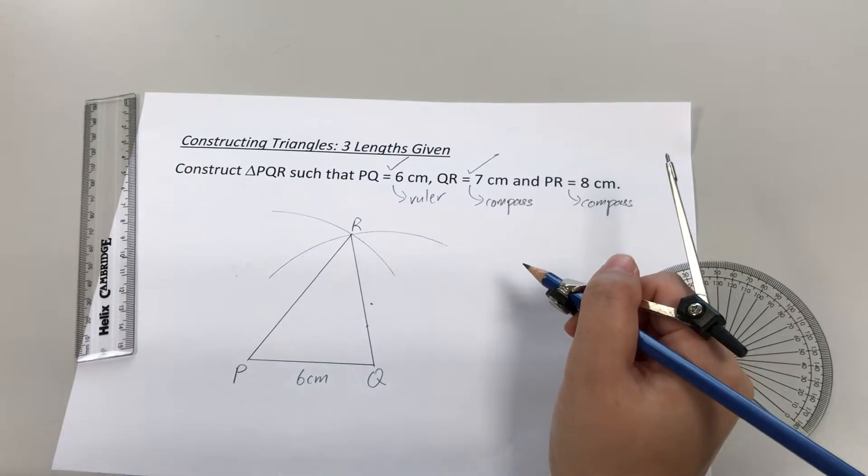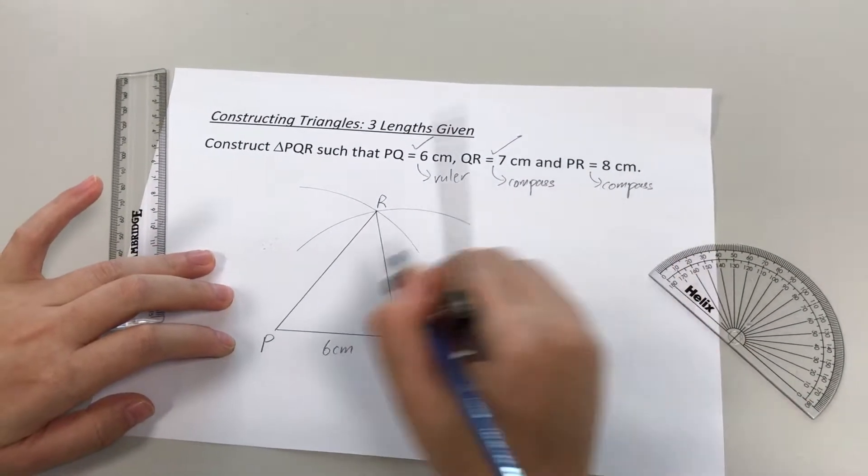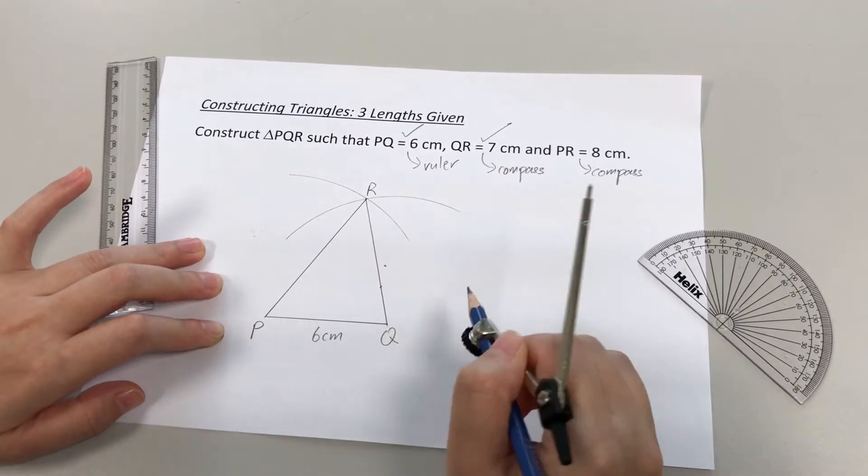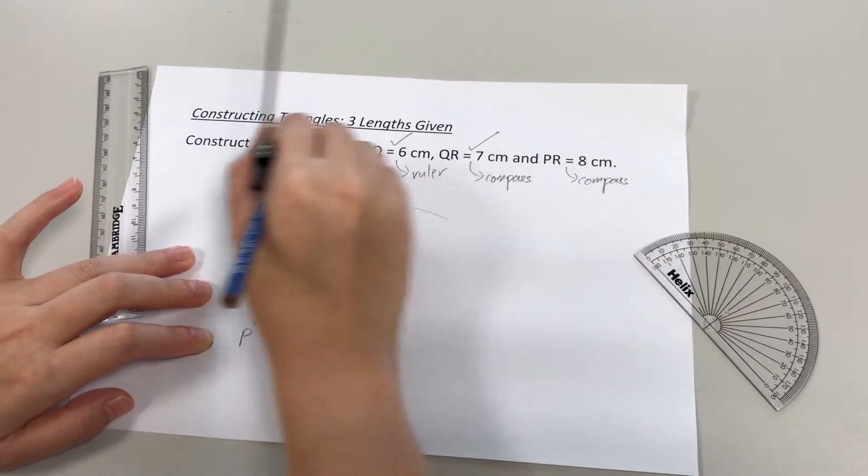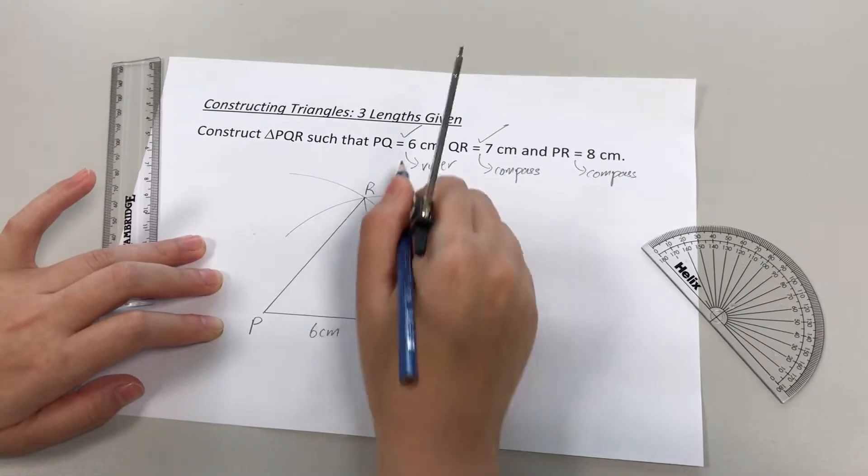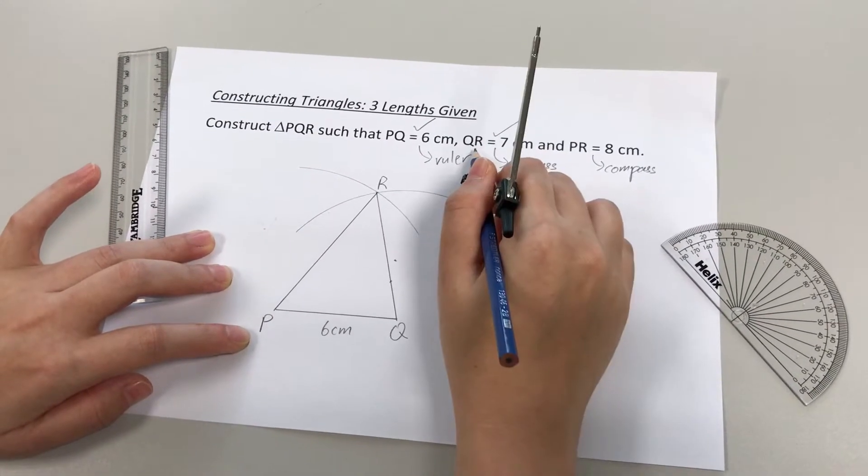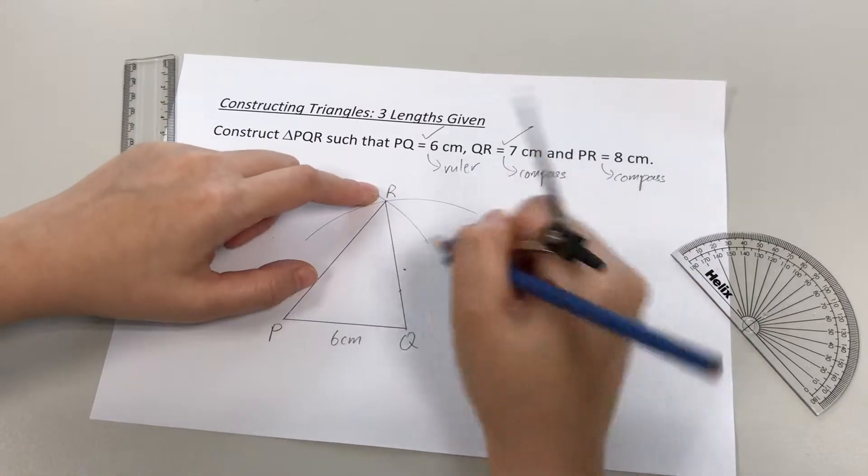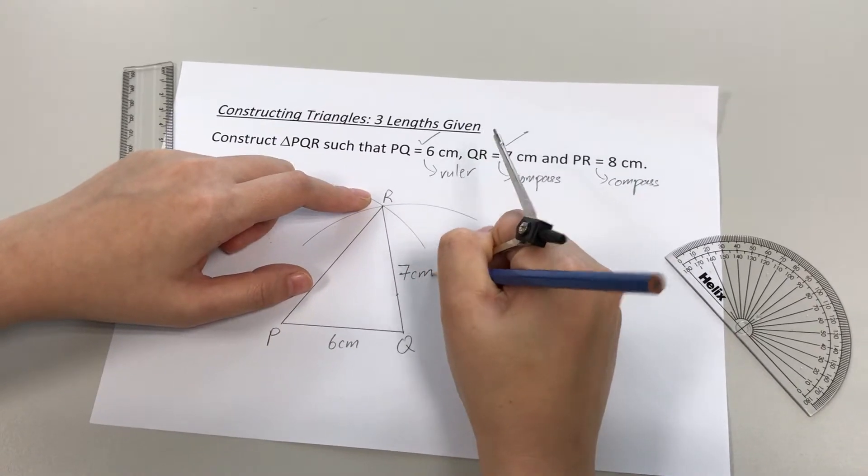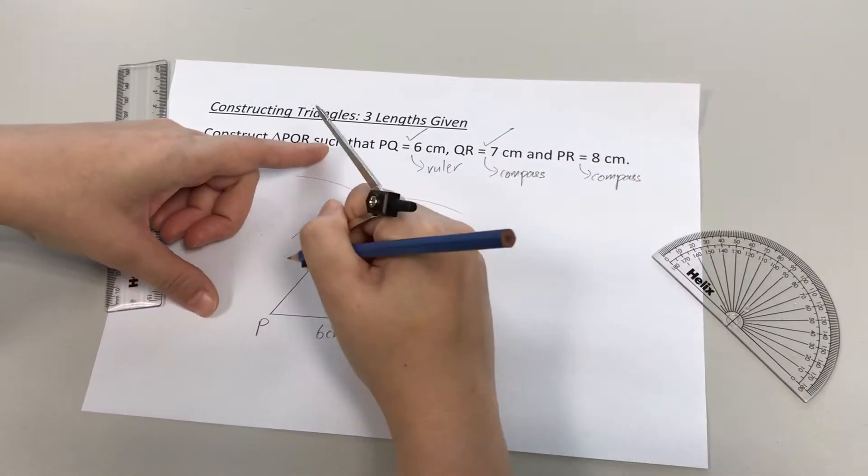But there's still one more last thing that we have to do. Okay, we have to make sure the triangle is completely labeled with all the information you are given in the question. Okay, so P, Q, 6 cm already labeled. Likewise, I need to label Q, R to be 7 cm. P, R, 8 cm.